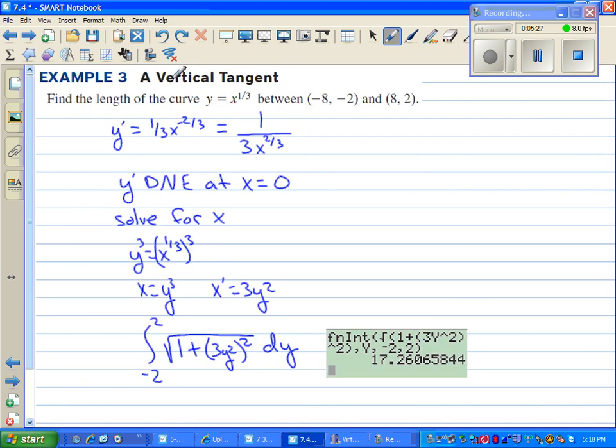In example 3, we have a vertical tangent. Find the length of the curve, y equals x to the 1 third, between the point negative 8, negative 2, and 8, 2. Well if you take the derivative of the function, remember we're going to have to do that in order to complete the formula for the length of a curve. You get 1 third x to the negative 2 thirds, which is 1 over 3x to the 2 thirds. Well the first derivative doesn't exist at x equals 0. That would make the bottom 0. And if we integrate from negative 8 to 8, 0 is going to be one of those values. So that's definitely going to be a problem.